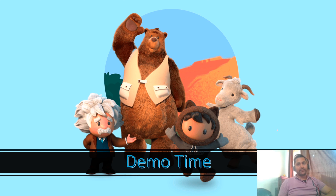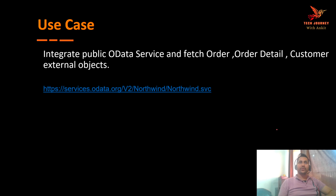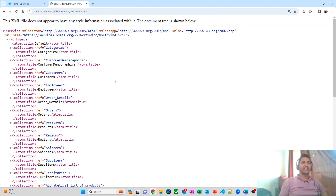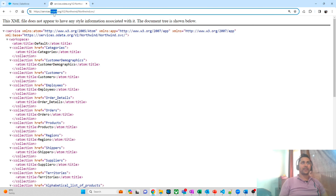Now moving to the demo. There are different use cases we will explore. In the first use case, we will integrate with a public OData service available on the web. With the help of this OData service, we will be fetching different objects like order, order detail, and the customer external object. I will also put the link to this web service in the video description. This web service is based on OData and has different types of tables such as orders and order details.